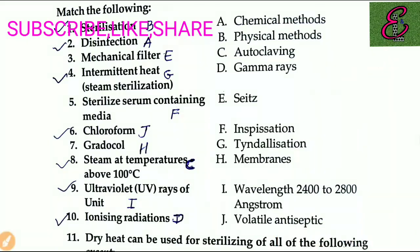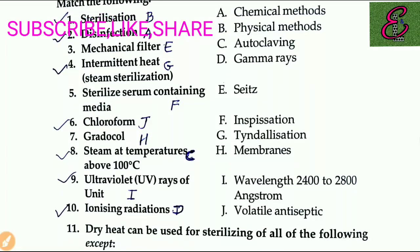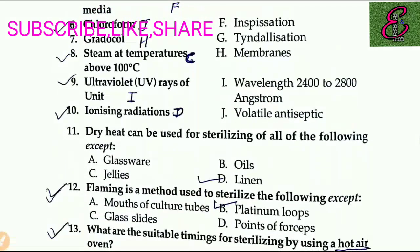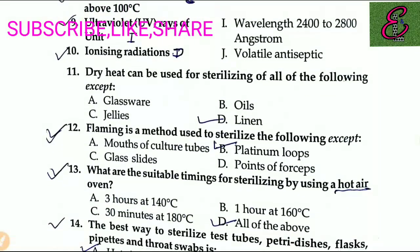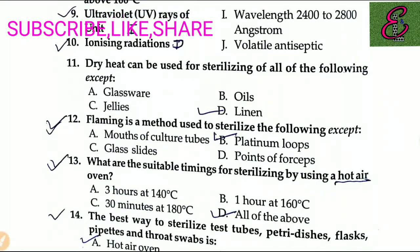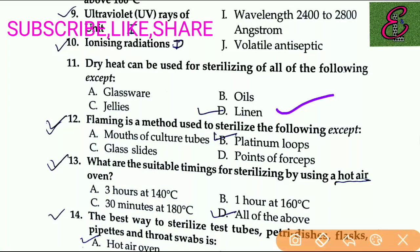Question number eleven: dry heat can be used for sterilizing all of the following. The answer is flaming.